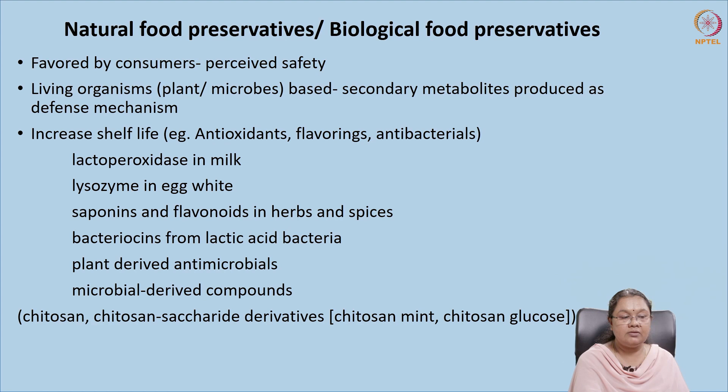Natural preservatives increase the shelf life of the product and can be categorized as antioxidants, flavorings, and antibacterials. We have different types in food: lysozyme in egg, saponins, flavonoids, and bacteriocins from lactic acids. We also have antimicrobials which are polyphenols, chitin, and chitosan. Chitosan can be fungal derived or, for commercial purposes, derived from shrimp shells. Conjugates or derivatives of chitosan also exhibit natural preservation properties.